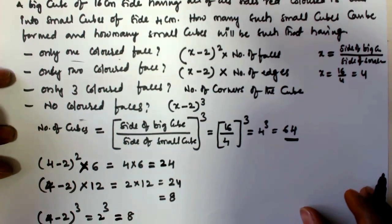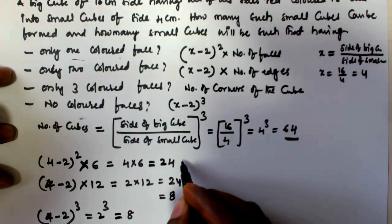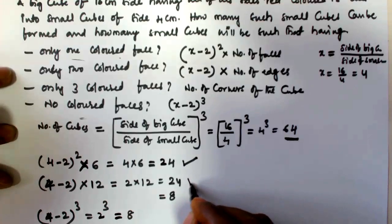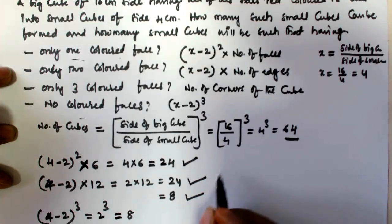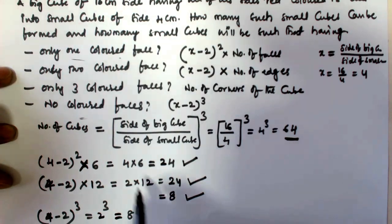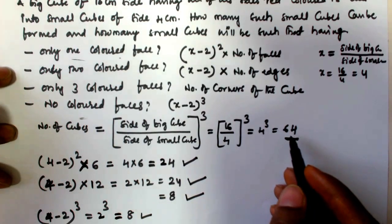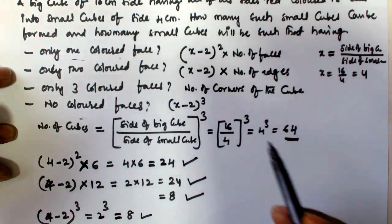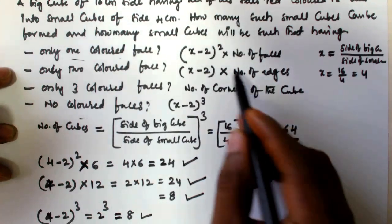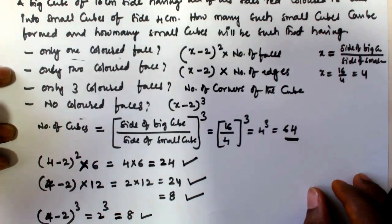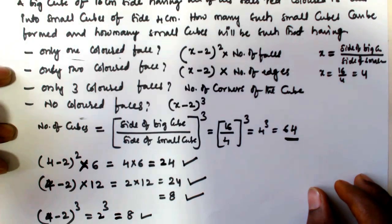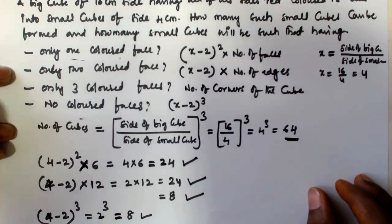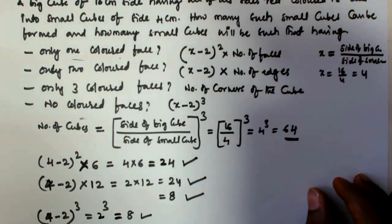Total number of cubes: 24 plus 24 plus 8 plus 8 equals 64. So 24 cubes have only one colored face, 24 cubes have only two colored faces, 8 cubes have three colored faces, and 8 cubes have no colored faces — totaling 64. This is the way to solve these kinds of problems using short-cut formulas. I hope you got this. If you have any doubt please leave a comment and please subscribe to my channel. Thank you very much.